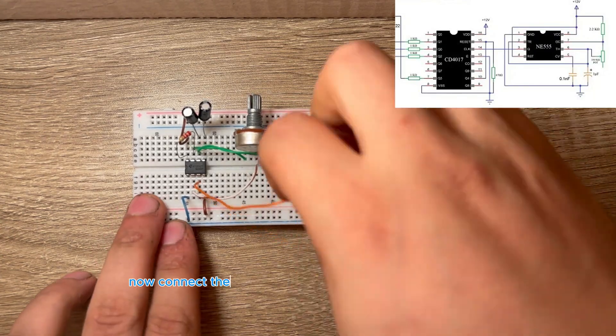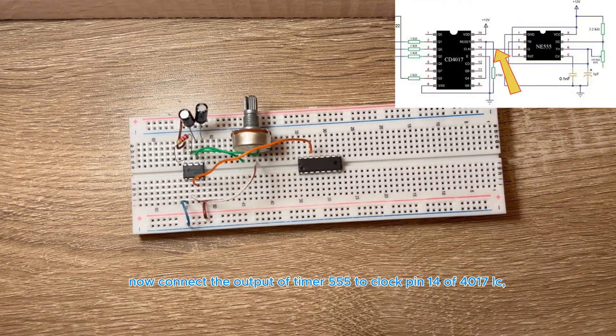Now connect the output of timer 555 to clock pin 14 of 4017 IC.